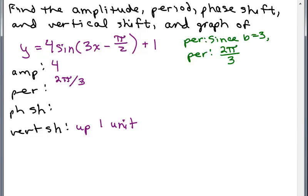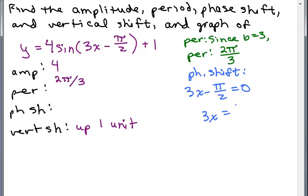The last thing we need is the phase shift. We take what's in the parentheses and set it equal to 0. So we take 3x minus π over 2 and set it equal to 0, then solve for x. Adding π over 2 to both sides, then multiplying both sides by 1/3, gives x equals π over 6. So the phase shift is π over 6 units to the right.